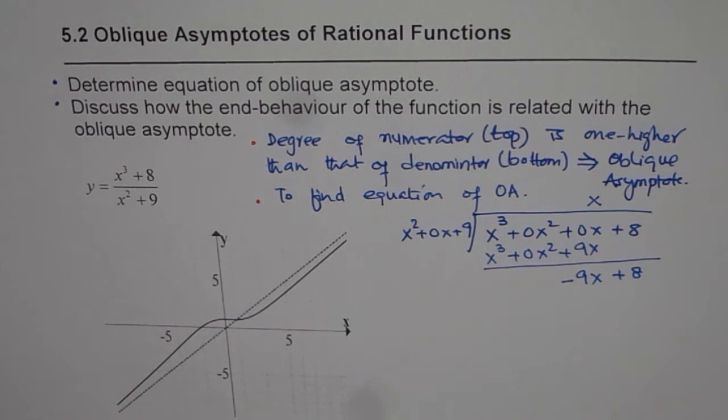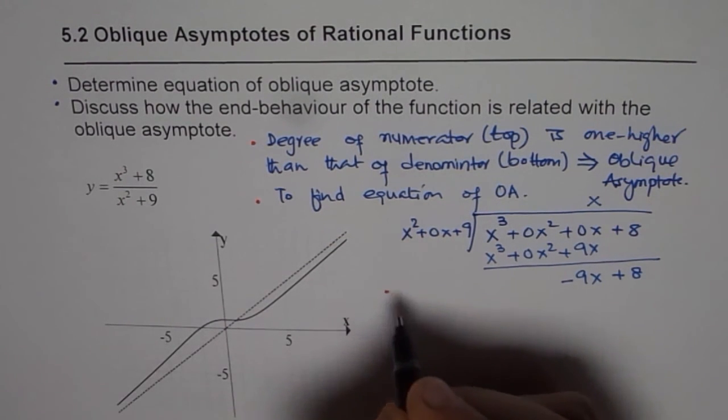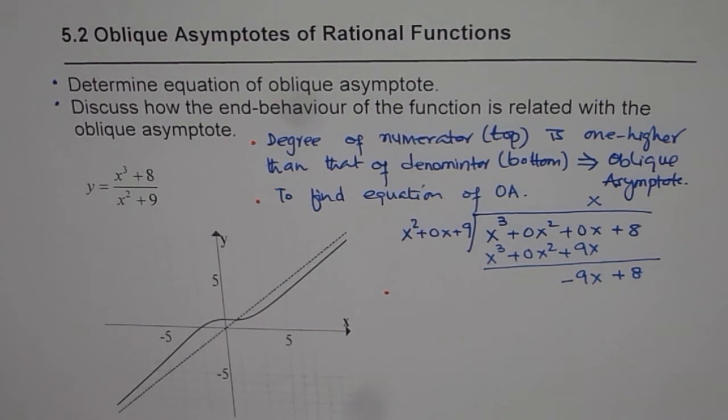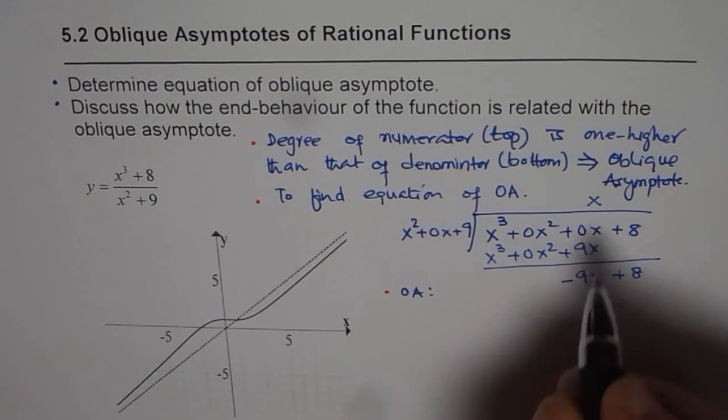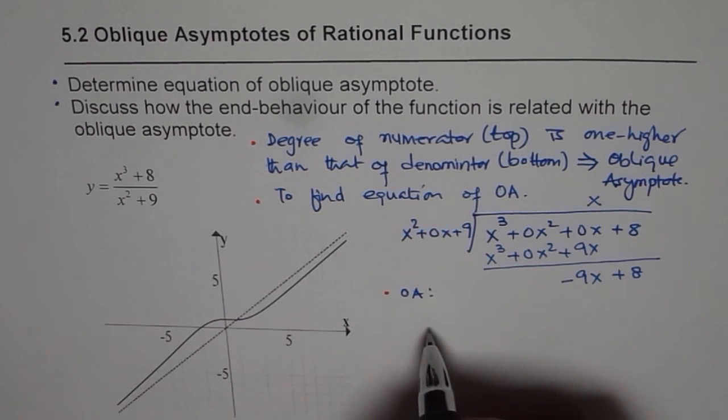Now we cannot divide. So when we divide, we get our equation as x. So that gives us oblique asymptote. So equation for oblique asymptote is, let me write OA, equation, the quotient, which is x.